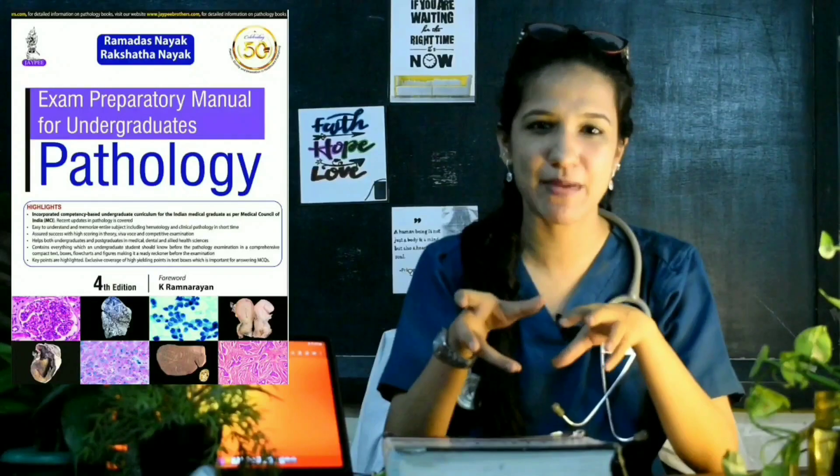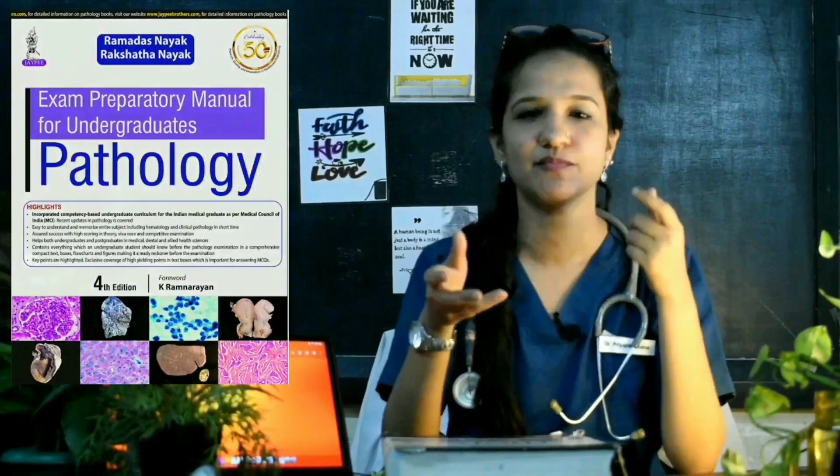Another book you should definitely read is Pathoma, which many people also use for USMLE preparation. It's concise and crisp and I would definitely recommend it. Other options include Goljan's Rapid Review for Pathology and Ramdas Nayak's pathology prep manual. However, I would highly recommend going for Harsh Mohan and Robbins along with Pathoma — these three books are my top picks.